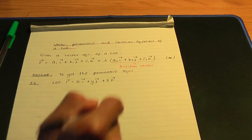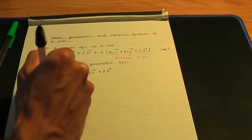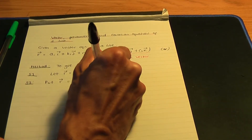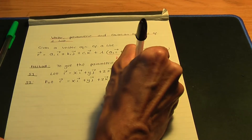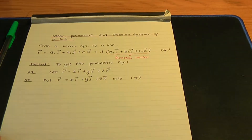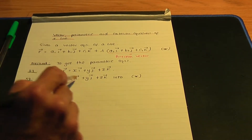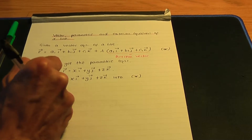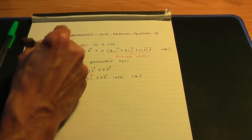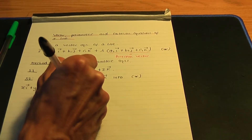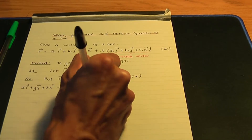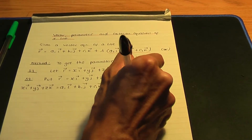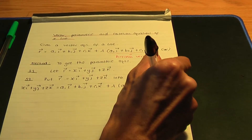Step two: put r, that is xi plus yj plus zk, into the vector equation of the line (star). So if I replace r by xi plus yj plus zk, we're going to have xi plus yj plus zk equal to, on the right-hand side, a1i plus b1j plus c1k plus lambda times the direction vector a2i plus b2j plus c2k.